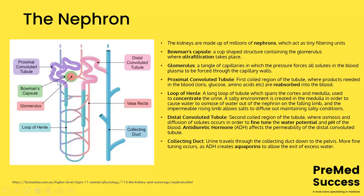This purple part is the proximal convoluted tubule — 'convoluted' means it coils around. Then you've got your loop of Henle, with a thin descending limb, thin ascending limb, and thick ascending limb — that's where urine concentration happens. This pink bit is your distal convoluted tubule, and then the collecting duct. The distal tubule and collecting duct are where water balance is fine-tuned — if you're dehydrated you keep more water; if you've drunk a lot you produce more dilute urine.